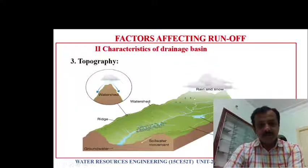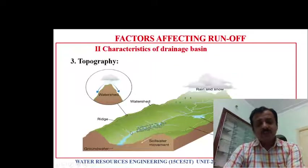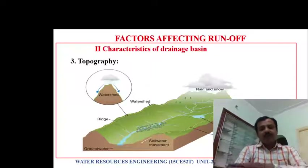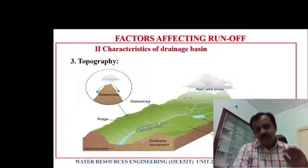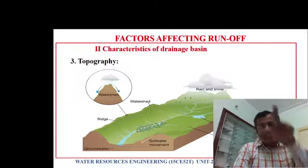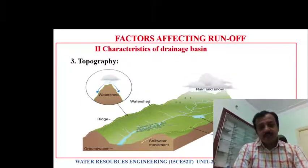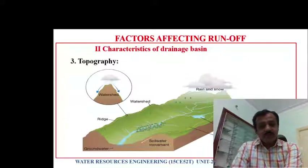When there is a steep slope, there are greater chances of water entering the drainage basin in lesser time. If you have a mild slope or a plain terrain, the rainwater takes more time to reach the drain and there will be no sudden peak flow. With steep slopes, peak discharges are high.